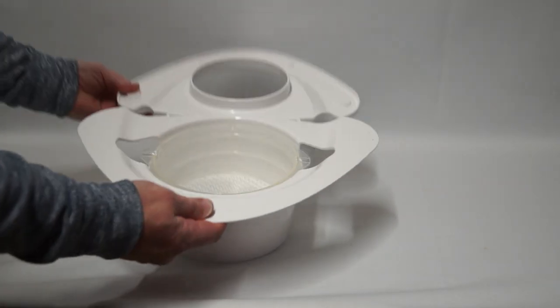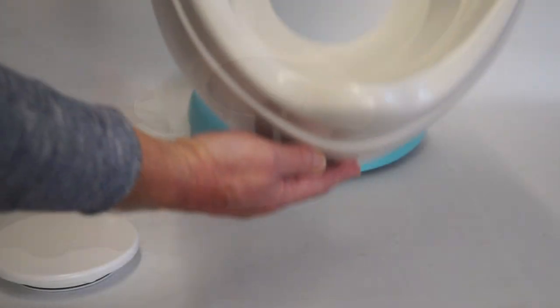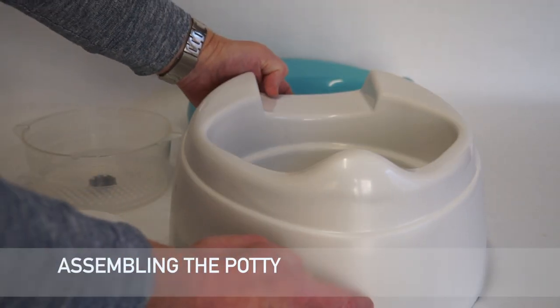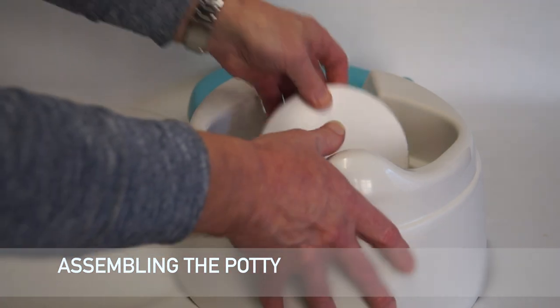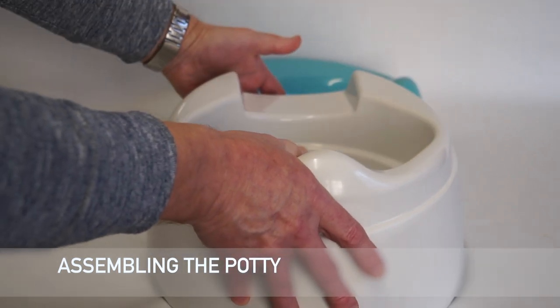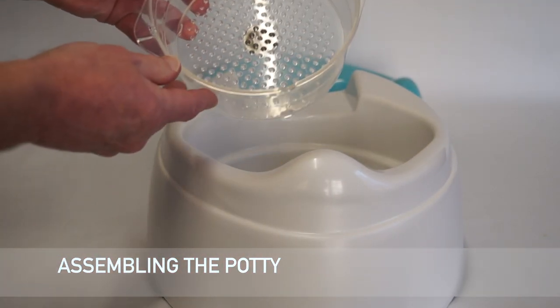The system is easily adapted to work with young children who use a potty. Simply insert the Uroflow meter into the base of the potty, add the clear Homeflow cup, place the top cover onto the potty, and it is ready to be used.